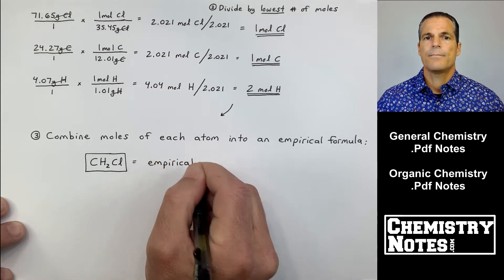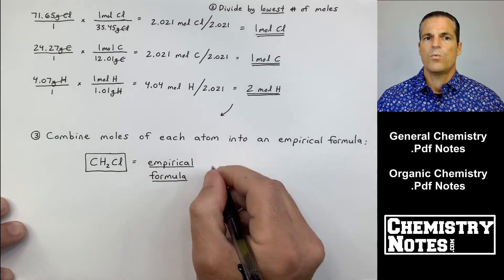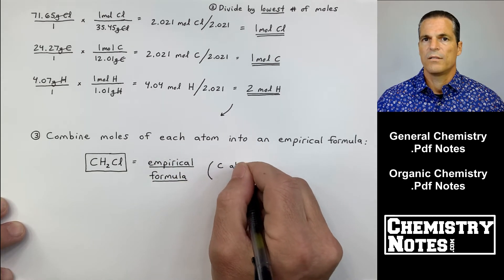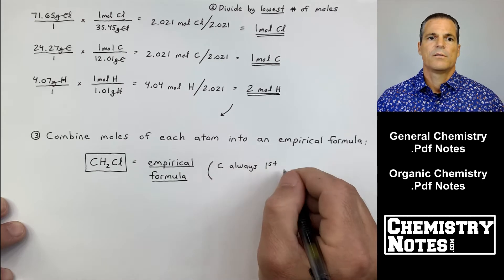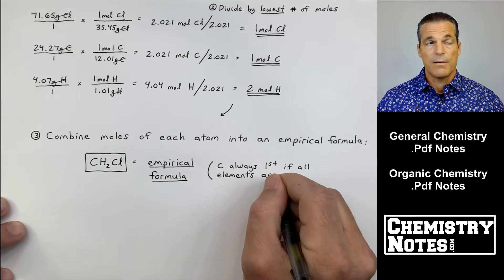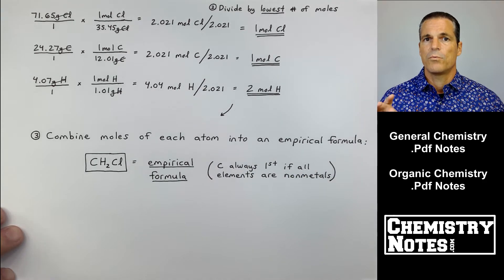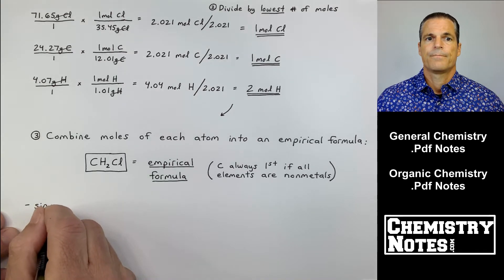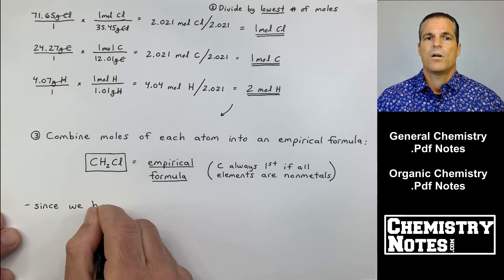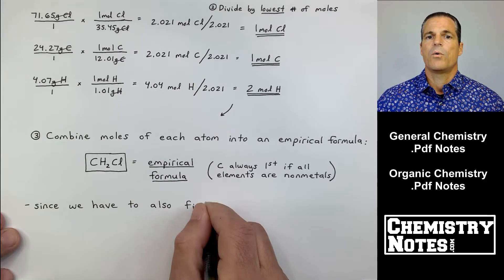If carbon is present, you always list him first if all the other guys are non-metals. So C, H2, Cl. We don't call it C1 H2 Cl1, the ones are understood, so it's CH2Cl. Now that's the empirical formula. It might be the molecular formula, but it's the empirical formula. That is the simplest whole number ratio of atoms.